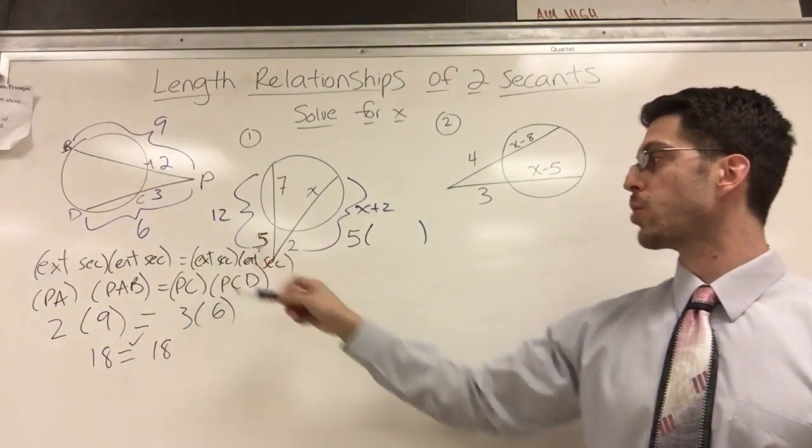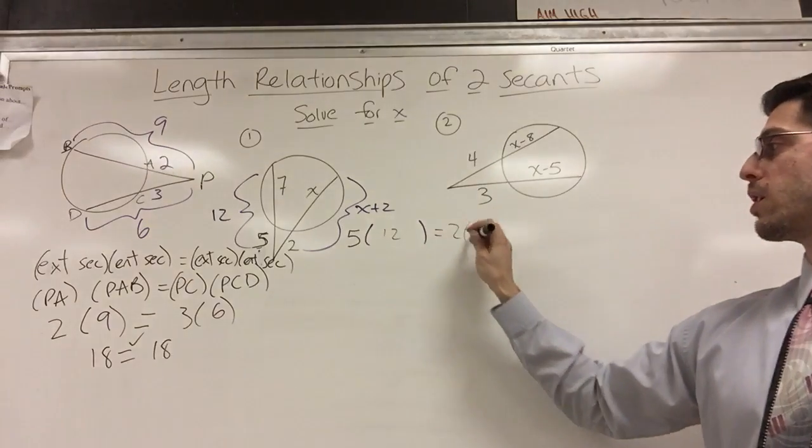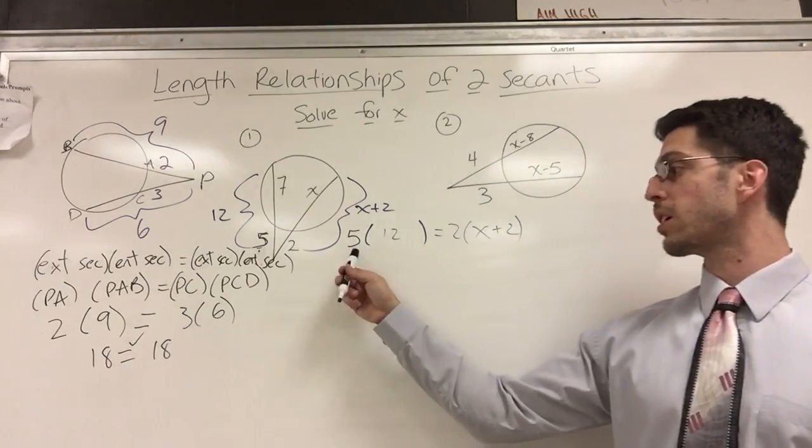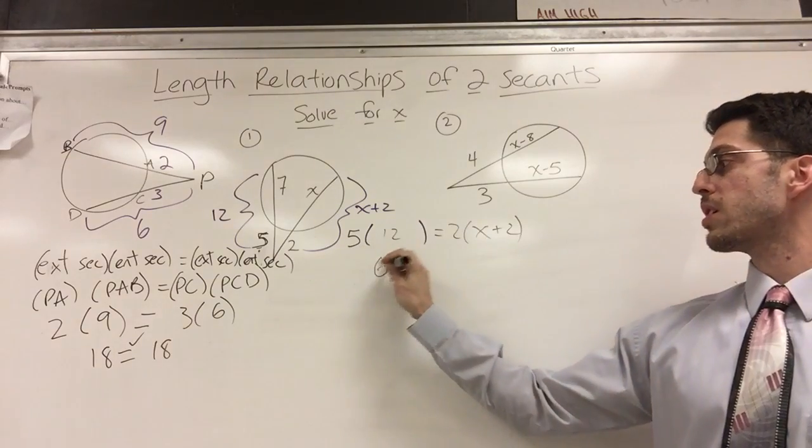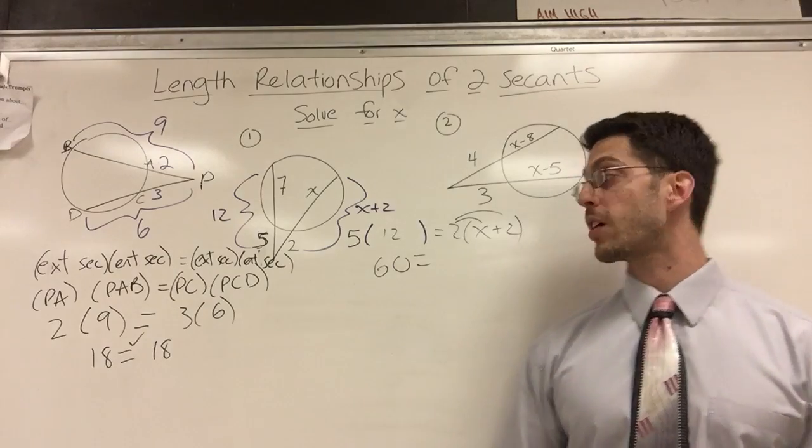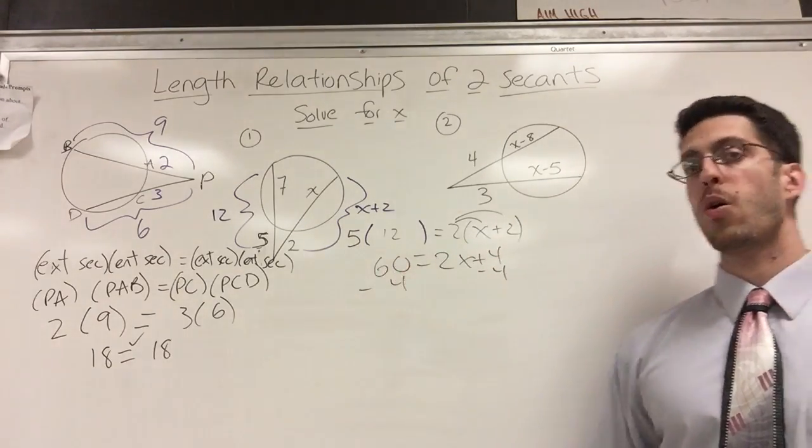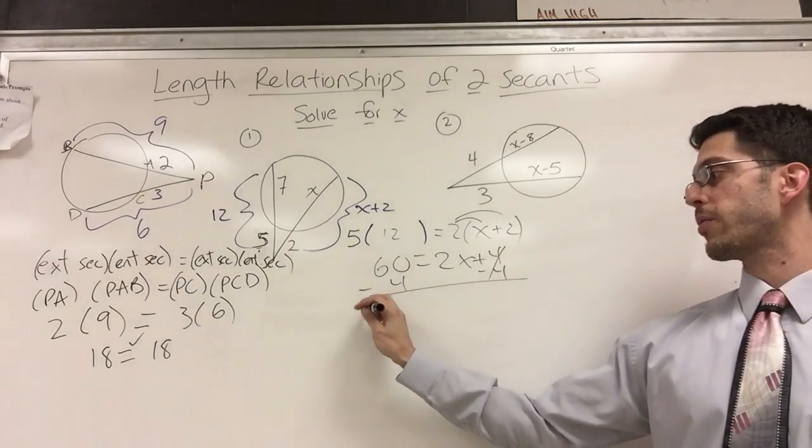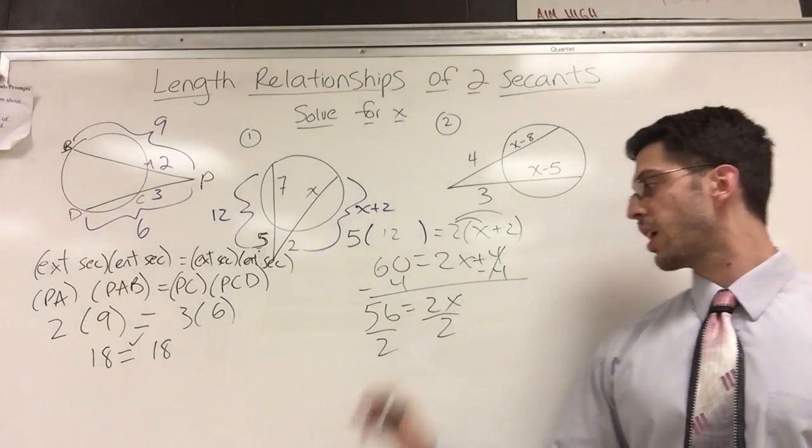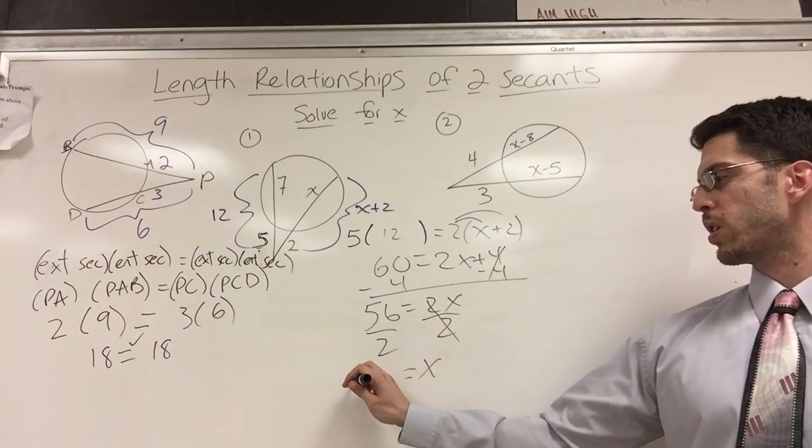So that's 5 times 12 equals 2 times the whole thing, x plus 2. So let's see. 5 times 12 is 60. Don't forget your distributive property. So again, you've got to be good at algebra to remember this stuff. That's 2x plus 4. I'm going to subtract 4 on both sides. What is that? 56 equals 2x divided by 2 on both sides. And x equals 28.